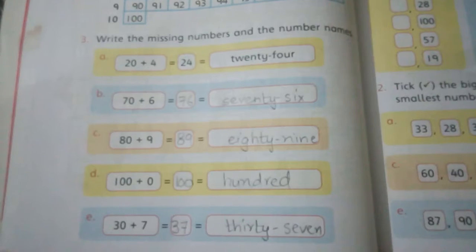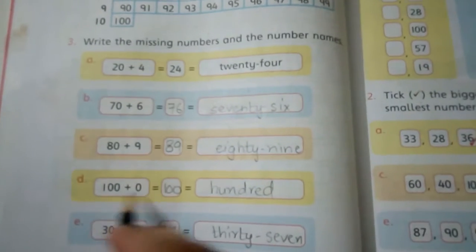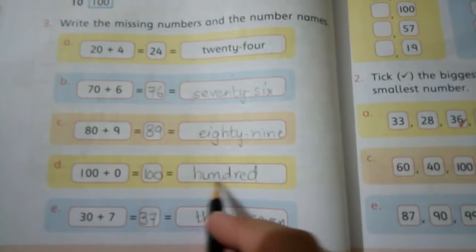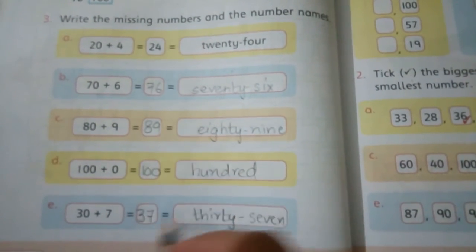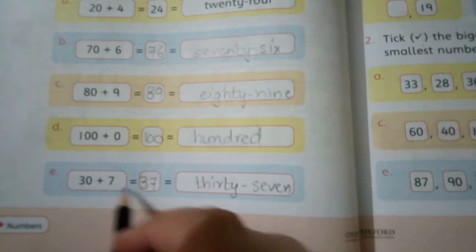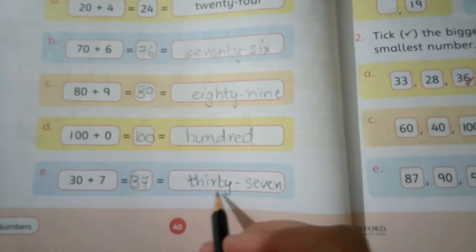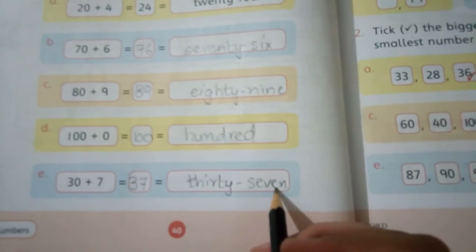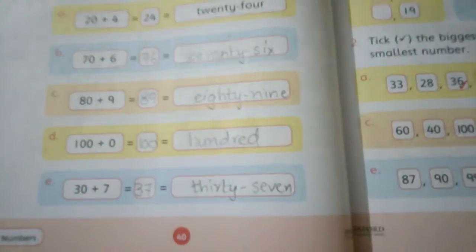Then spellings of 100: O-N-E H-U-N-D-R-E-D. 30 plus 7 is 37, and spellings are T-H-I-R-T-Y dash S-E-V-E-N. So this is today's work on page 40.